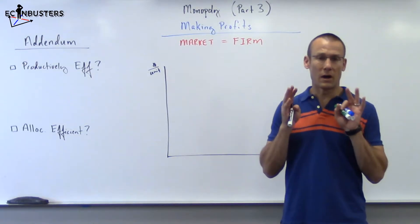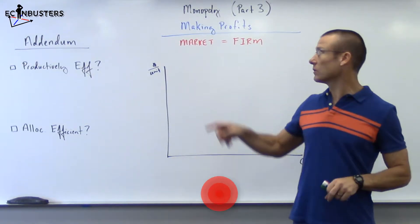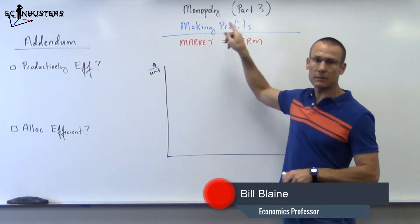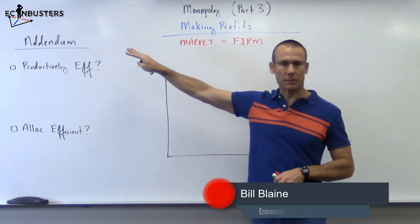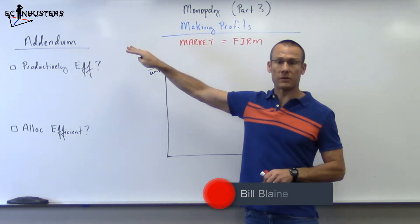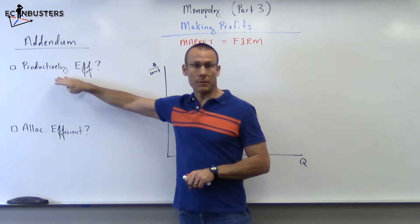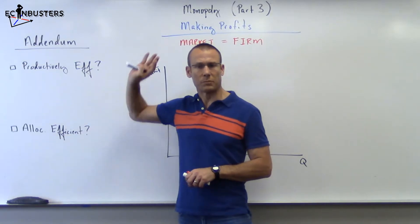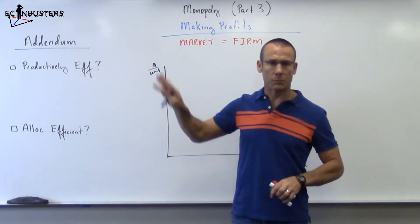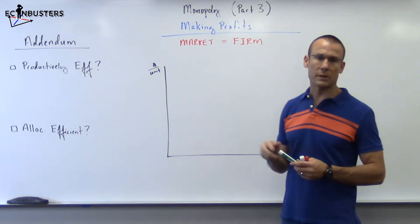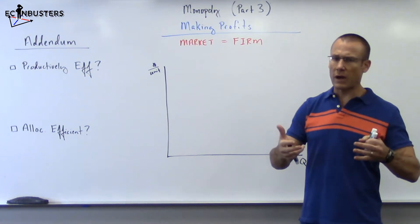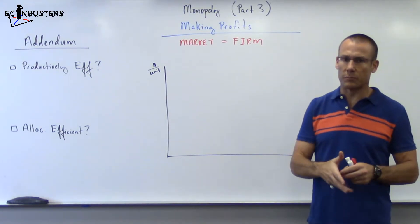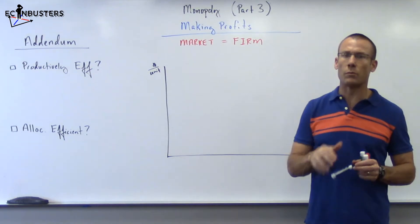Hey everybody, welcome back. We're on Monopoly still — we've got part three now. We're going to look at a monopoly making profits. We're going to have a little addendum at the end of this video about evaluating whether or not we're productively efficient or allocatively efficient, but that'll be at the end. Back to monopoly, part three. We've drawn this graph once, but now we're going to draw it and add an additional curve, because we need to show making profits.